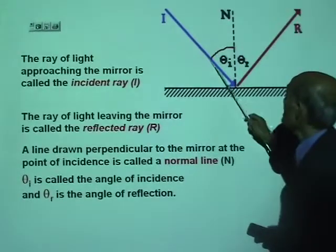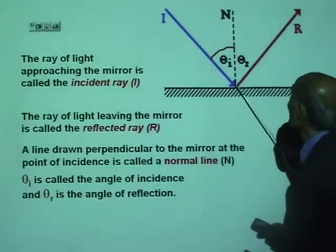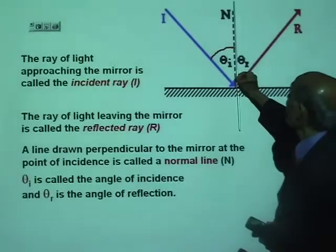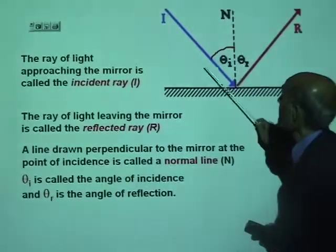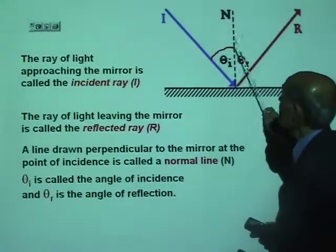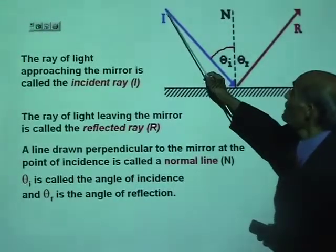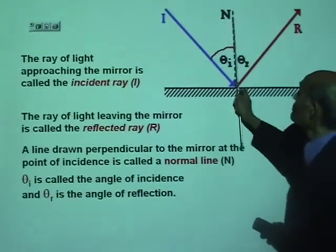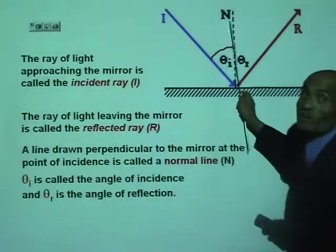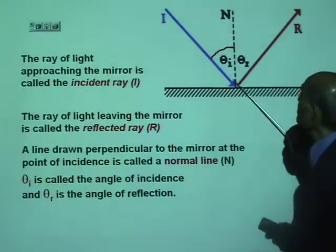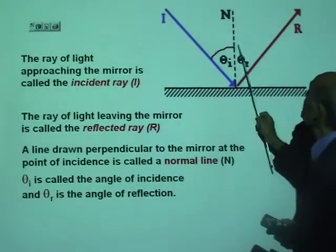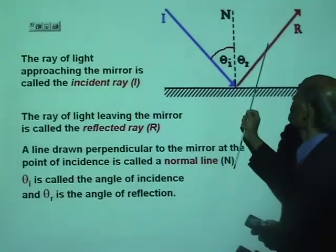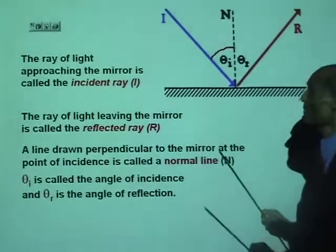So you have an incident ray, a reflected ray, and a normal. The angle of incidence is the angle made by the incident ray with the normal. The angle of reflection is the angle made by the reflected ray with the normal.